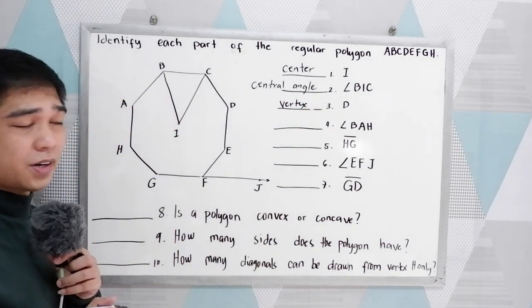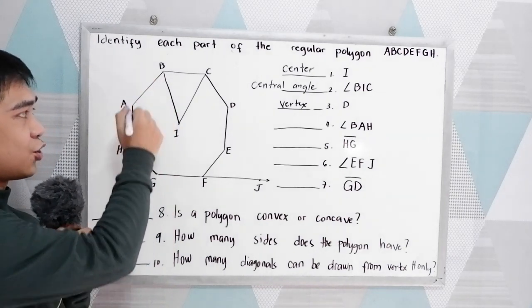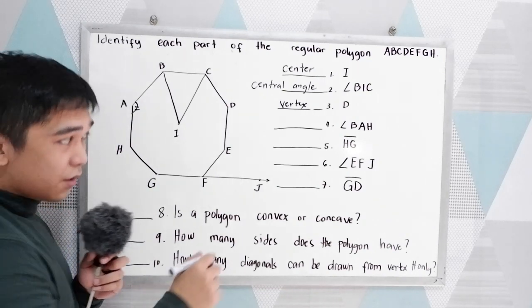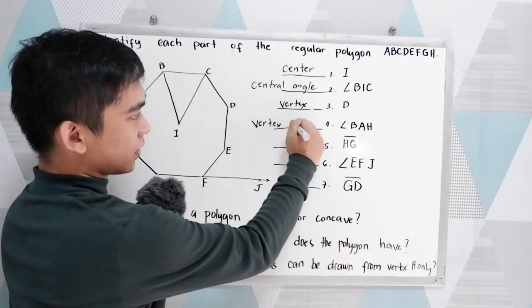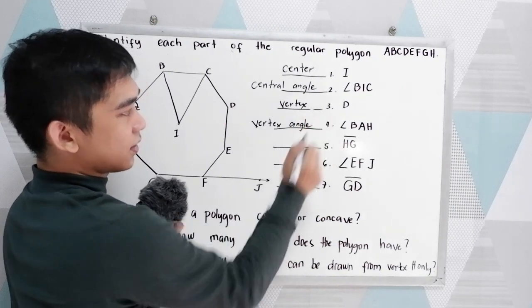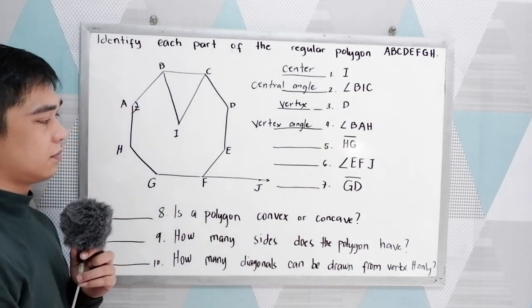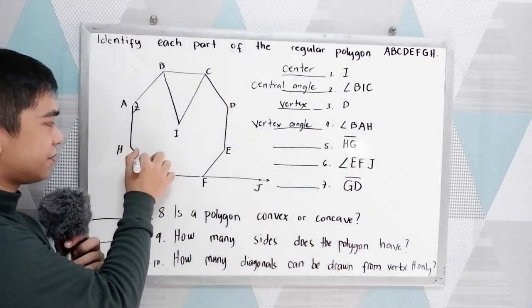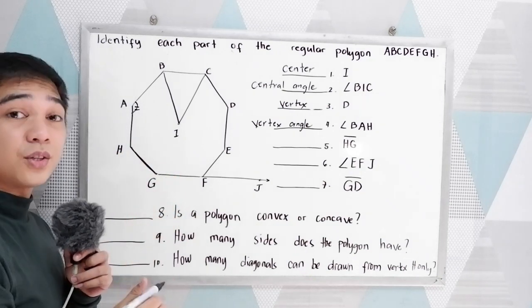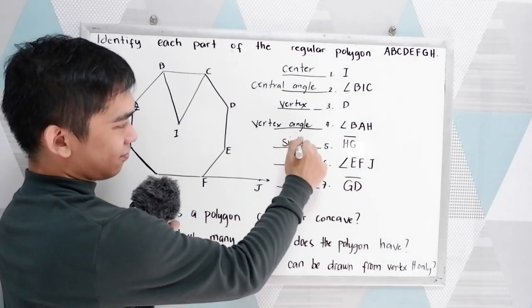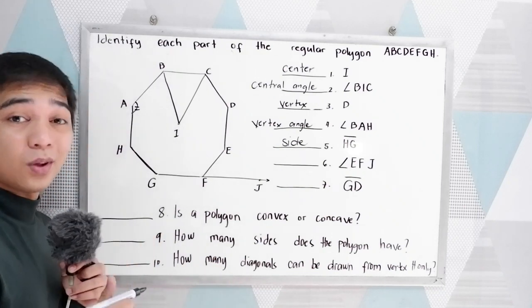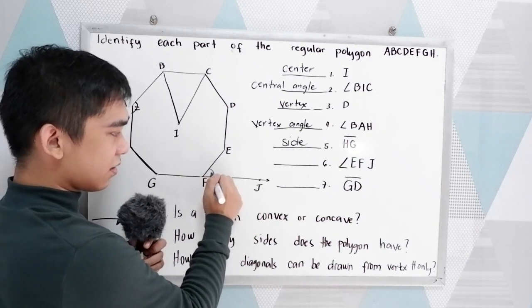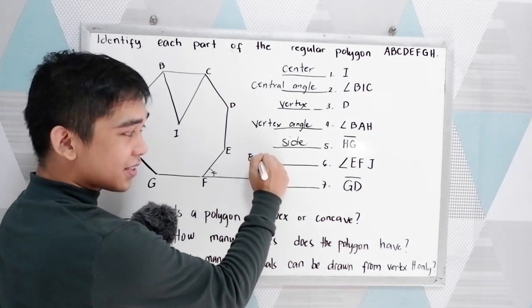Number 4: angle BAH is the vertex angle. Number 5: segment HG is the side of the polygon. Number 6: angle EFJ is the exterior angle.